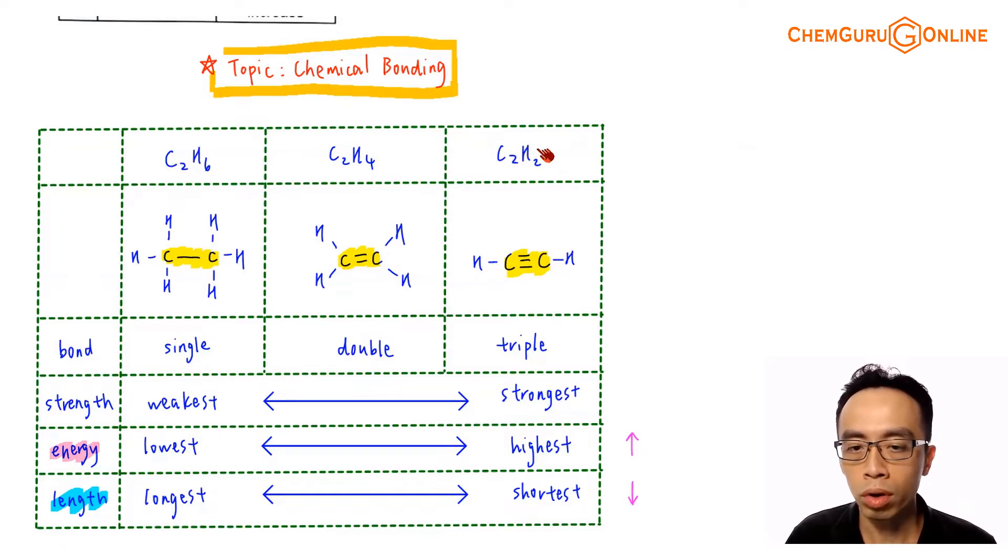And involving C2H2, the ethyne functional group, this carbon-carbon bond is a triple bond. Now if the comparison is between carbon-carbon single bond versus carbon-carbon double bond versus carbon-carbon triple bond, then it is actually very straightforward.